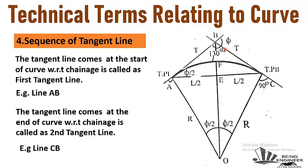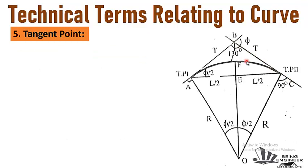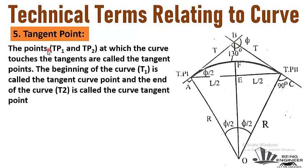The fifth term is tangent point. The points TP1 and TP2 at which the curve touches the tangents are called tangent points. The beginning of the curve is T1, represented by different notations such as TP1 or PC.